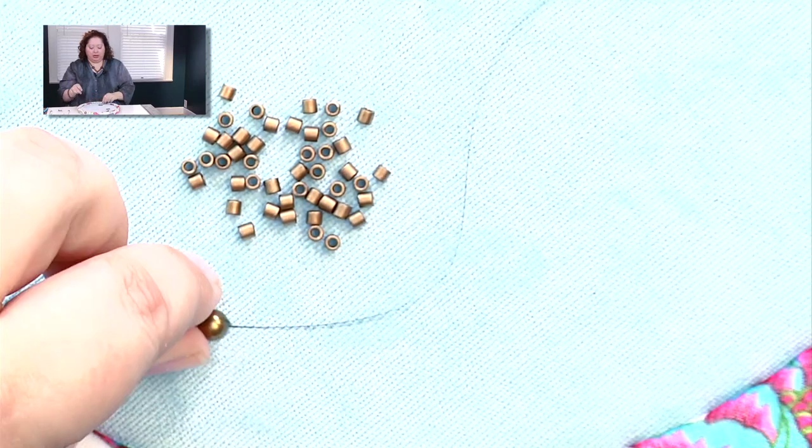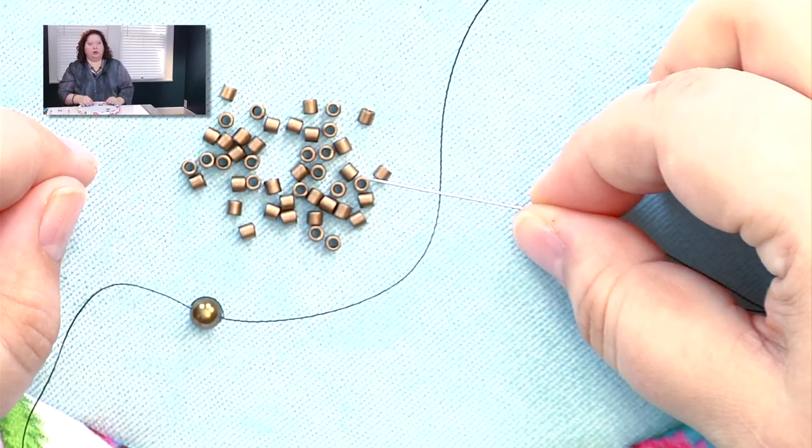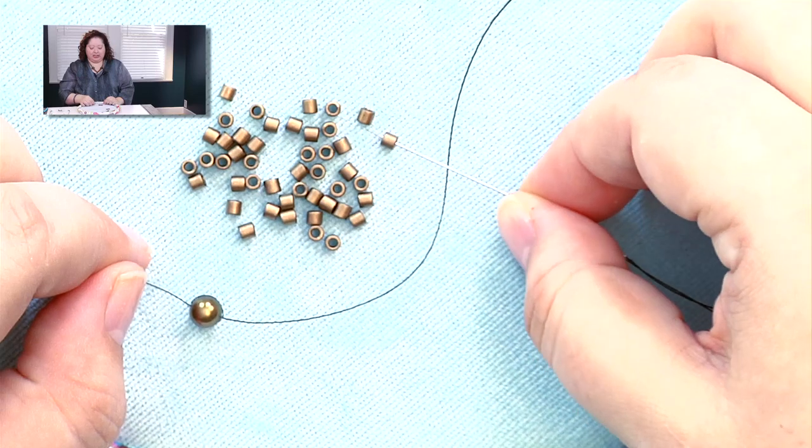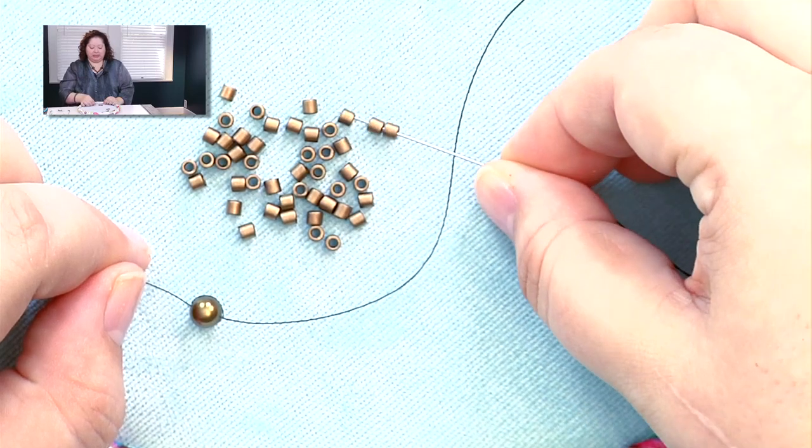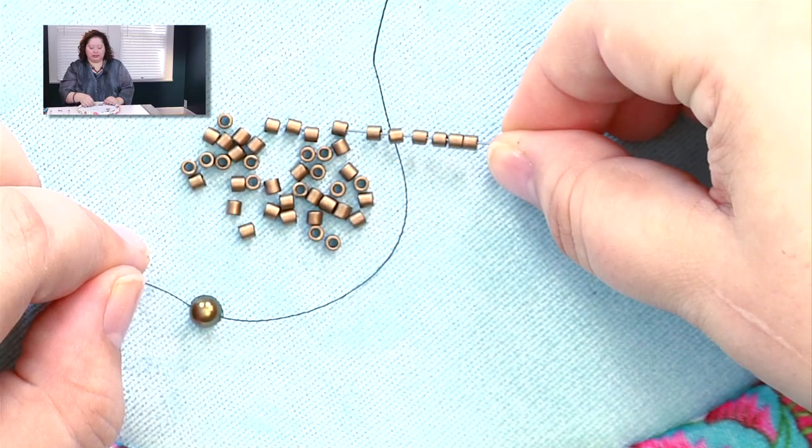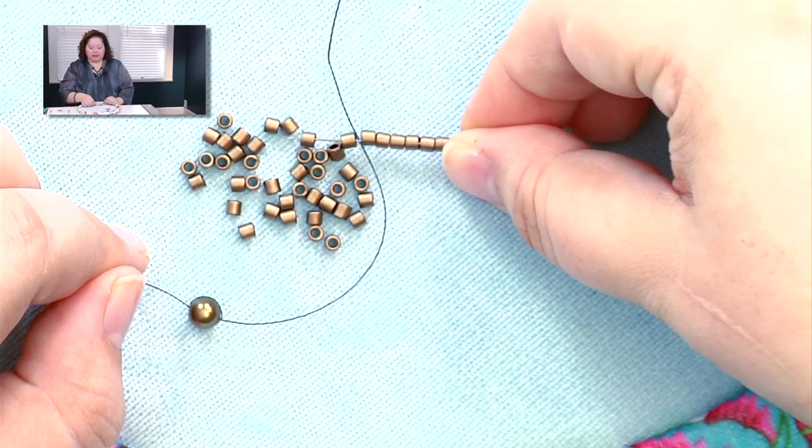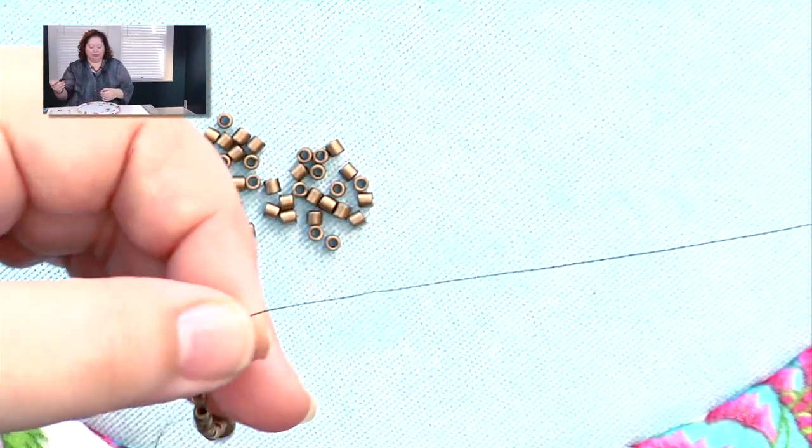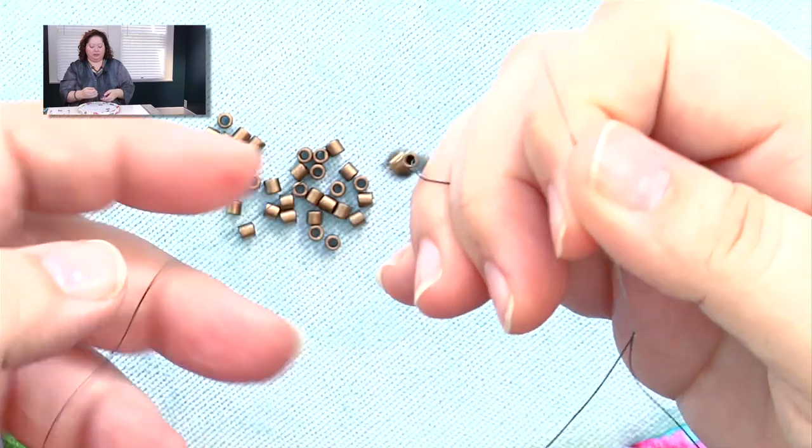Then you'll pick up the number of beads that your project calls for, for the toggle closure. In this case I generally make my toggles 10 beads wide, so 4, 5, 6, 7, 8, 9, and 10. And I'll bring those down to my stopper bead there.